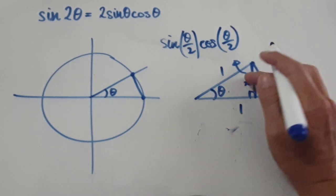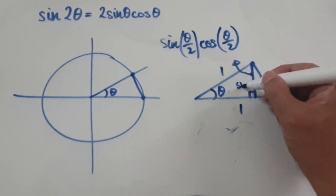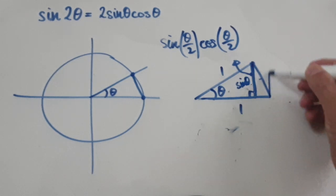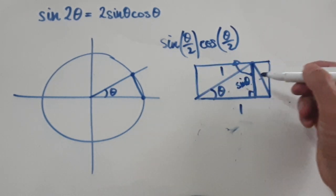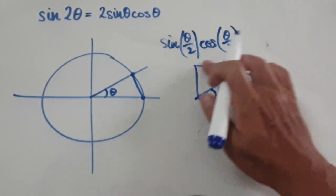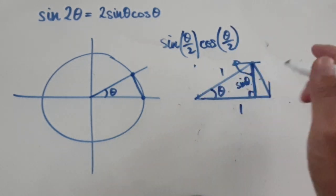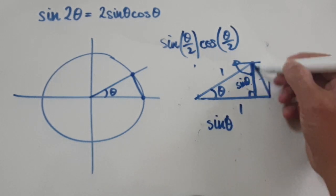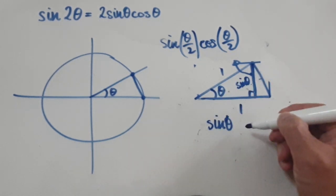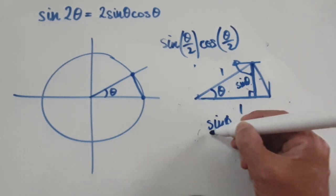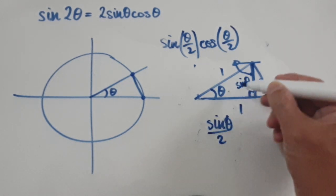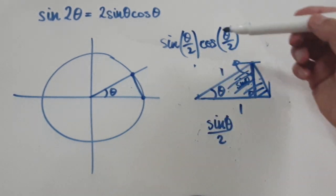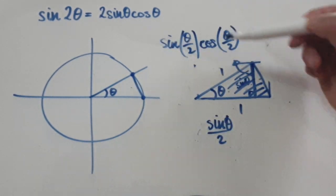When you have the height as sine(theta), you multiply the height by the base — that gives you the whole rectangle — then cut in half to get the area of the triangle. So the area of this triangle is sine(theta) times the base of 1, divided by 2. That is the area of this triangle.